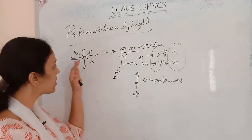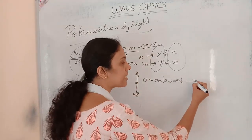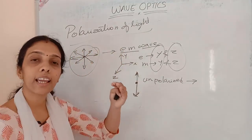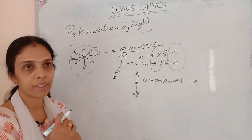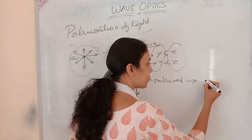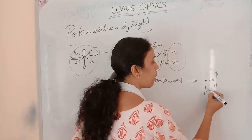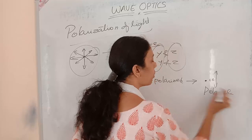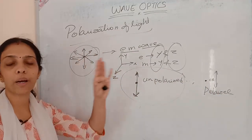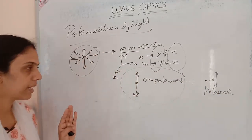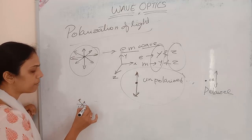After polarization, the intensity reduces because only one component remains — the other component is blocked. So either the perpendicular component or the parallel component will exist. That remaining single-component wave is called polarized light. An unpolarized light has both components; a polarized light has only one — either perpendicular or parallel.